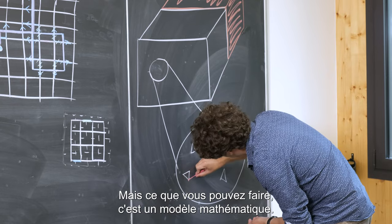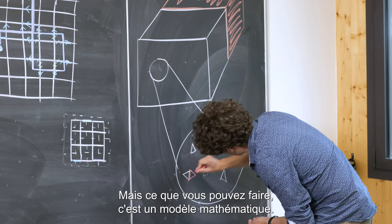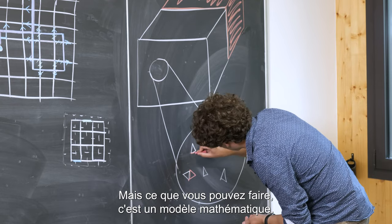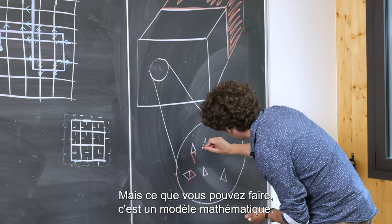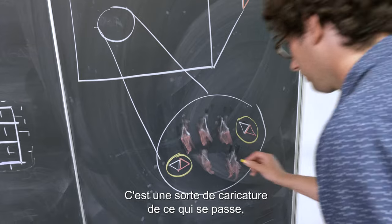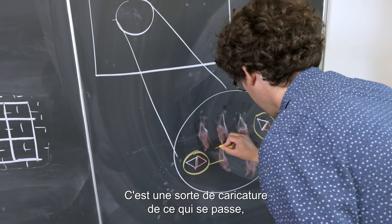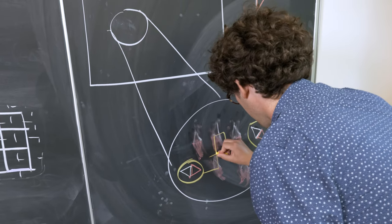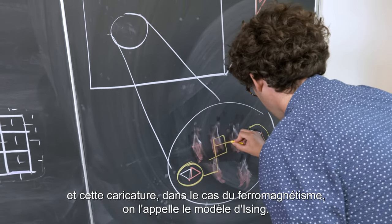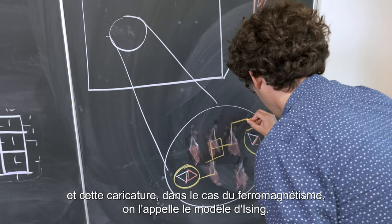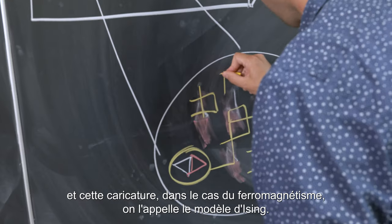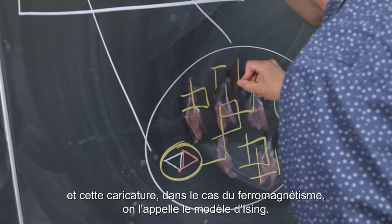What you can do is build a mathematical model — it's kind of a caricature of what is happening. And this caricature, in the case of ferromagnetism, is called the Ising model.